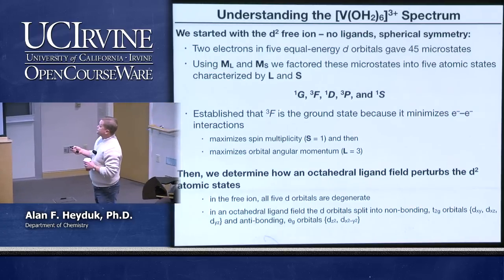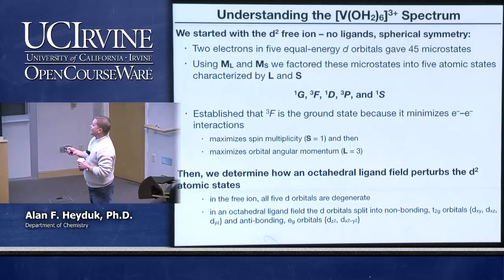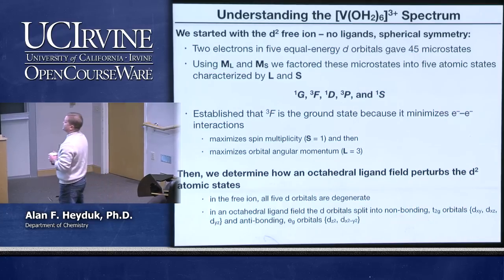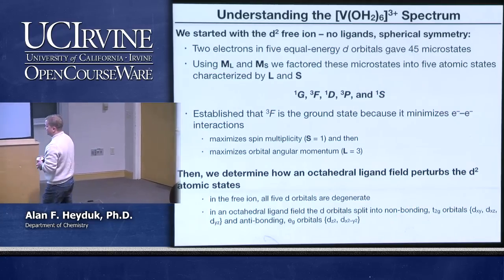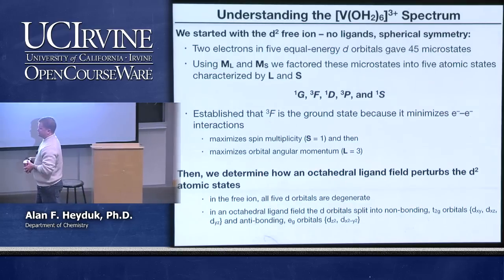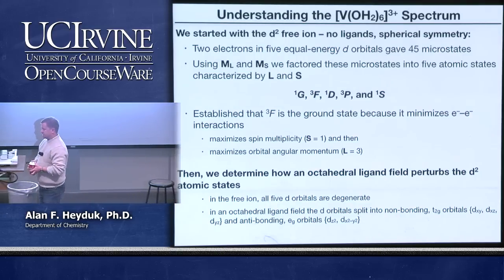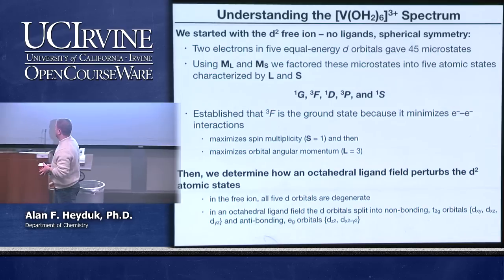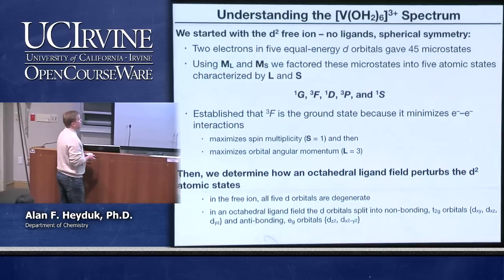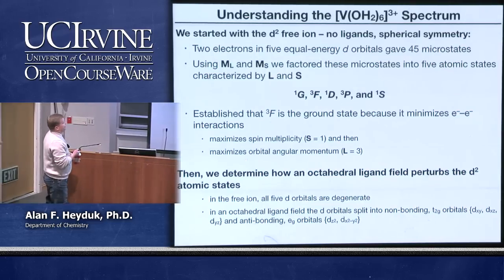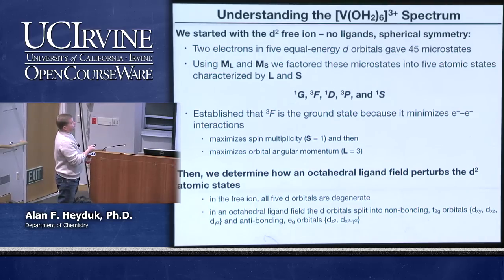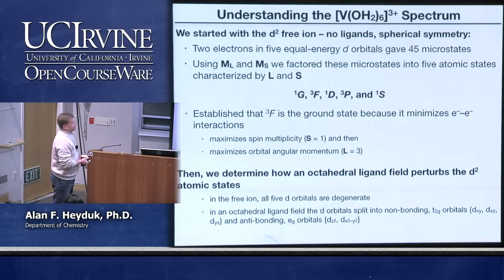The ground state we establish is triplet F because it both maximizes the spin multiplicity and maximizes the orbital angular momentum. The triplet F has 21 different microstates — it has the greatest microstate degeneracy and is the ground state. These five electronic states are for the free ion where the D orbitals are all at the same energy.